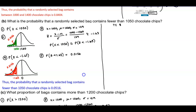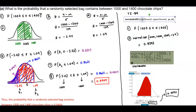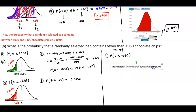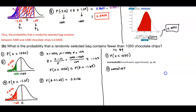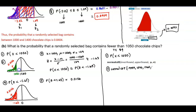Let's do the next one using the TI-84 calculator — we're not going to convert to Z-scores. We want to find the probability that X is less than 1,050. We use normal CDF. Everything lower than 1,050 means the lower bound is negative 9999, the upper bound is 1,050, the mean is 1,260, and the standard deviation is 129.